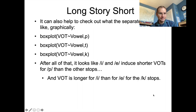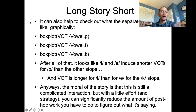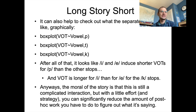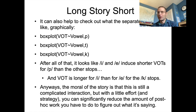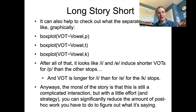The summary: it looks like E and A induce shorter VOTs for P than the other stops, and VOT is longer for E than A for the K stops. But the overall moral is that this is still a complicated interaction with a lot of comparisons to make, even when focusing on one-dimensional differences. With a little bit of effort and strategy you can reduce the amount of post hoc work needed. This is something to consider when designing your study — try to prevent having to do a huge amount of work at the back end. It's tempting to throw everything in to find if there's an interaction, but it can become a real headache when you run the stats.